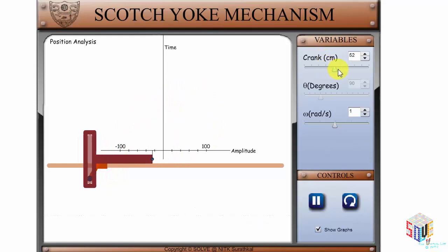By moving the slider, you can vary the crank and angular velocity, and corresponding changes can be seen in the animation. For various lengths of crank and angular velocities, the amplitude vs time graph can be plotted.